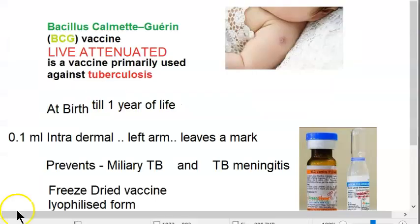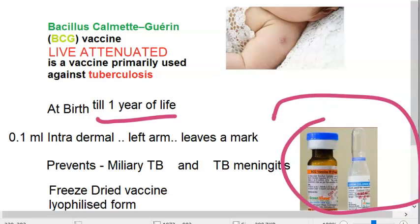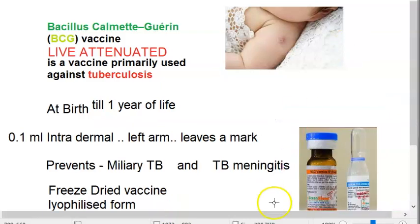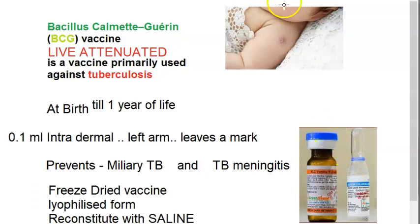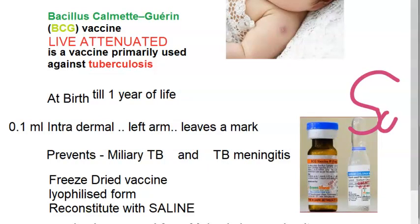The best way to prevent TB is the BCG vaccine, given at birth. If missed, it can be given up to one year of age. It is administered on the left arm at the insertion of the deltoid. The vaccine comes as a lyophilized (freeze-dried) powder in a colored bottle, which must be reconstituted with saline — not water.